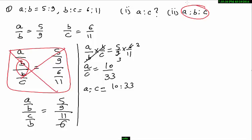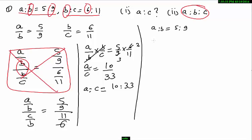To find A to B to C, we need to make B equal in both ratios. Here A is to B is 5 to 9, and B is to C is 6 to 11. Notice that B is 9 in the first ratio and 6 in the second ratio.